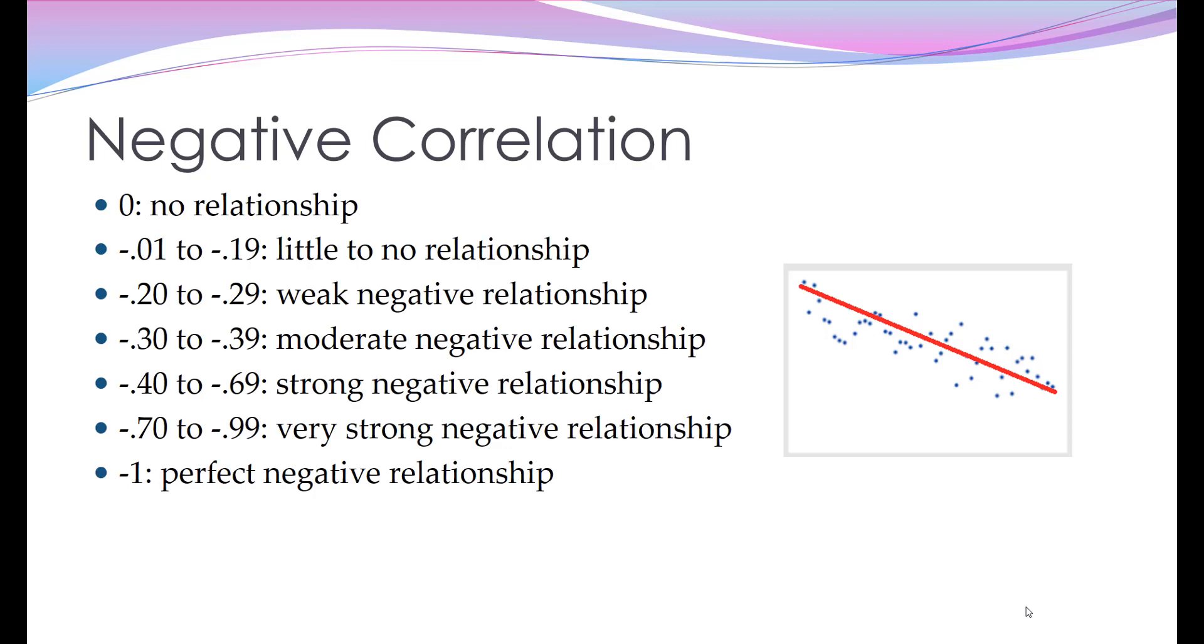Likewise, negative correlation, where you can see the line slopes downwards in the other direction, this runs from 0 all the way to minus 1. And again, those kind of categories give you a feel for the strength of the negative relationship.